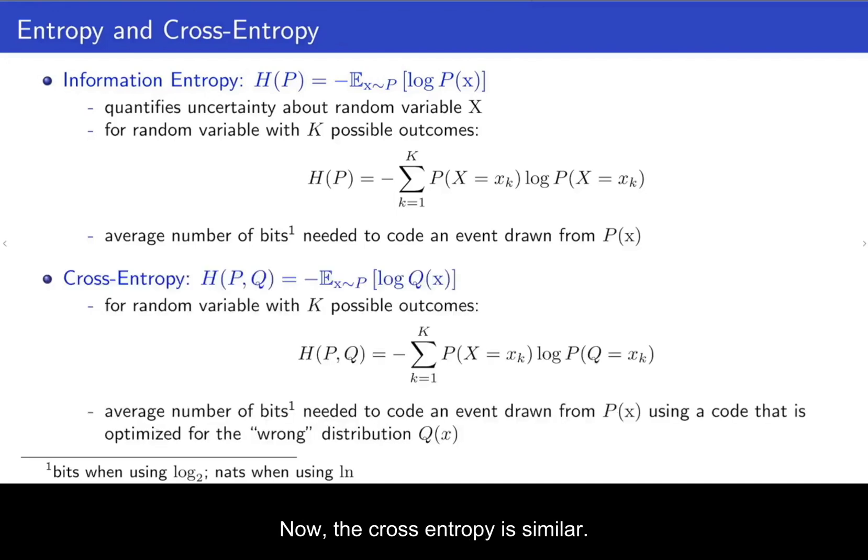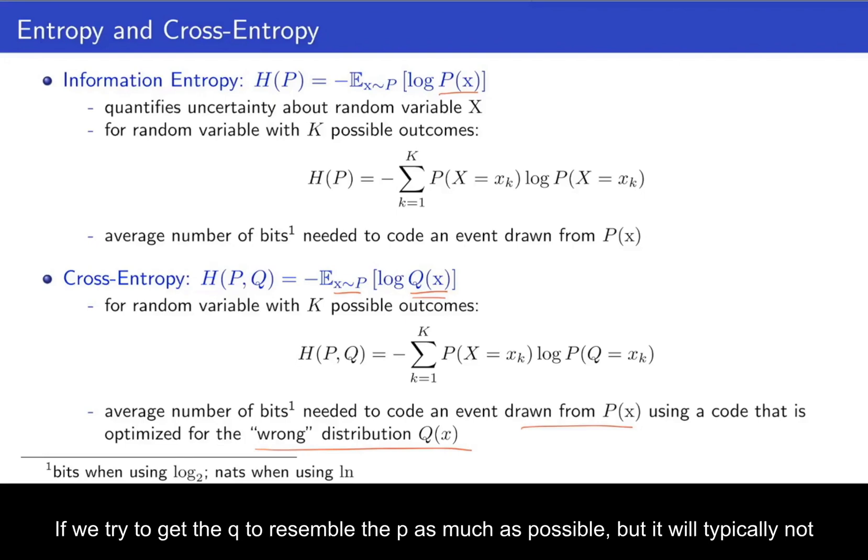Alright, so that's information entropy. Now, the cross-entropy is similar. It only differs in that there's another distribution Q(x) here, instead of the P(x) up there. We still take an expectation with respect to samples coming from this distribution P, but we quantify the log probability of this distribution Q(x). Now, you can interpret this as the average number of bits needed to code an event drawn from P(x), but using a code that is optimized for the wrong distribution Q(x). And the way in which we'll use this is that this Q here will be the probability distribution that our model outputs, and the P is the distribution of the true data. And we try to get the Q to resemble the P as much as possible, but it will typically not be perfect. And that's why the cross-entropy will typically be larger than the information entropy.